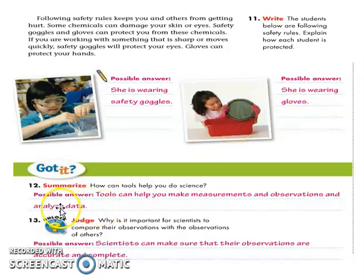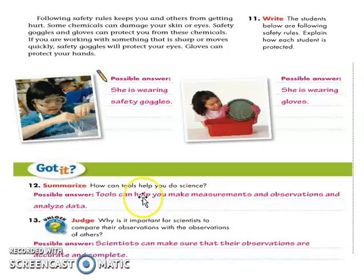Let's proceed to number 12: how can tools help you do science? I want to inform you that science is not only happening in school — it's happening everywhere. When your mom boils water to make coffee, that is science. The kettle has an automatic thermometer that stops when it reaches the boiling point. Tools can help you make measurements, observations, and analyze data.